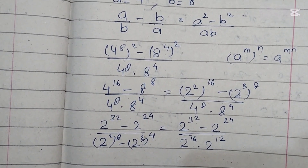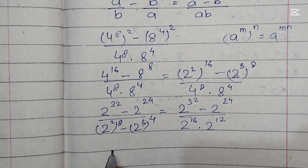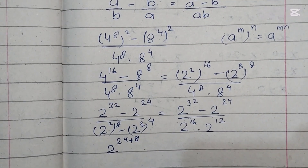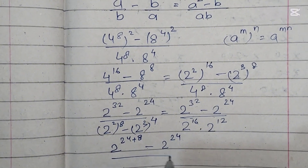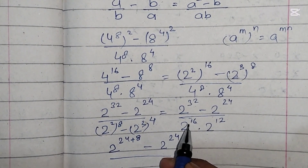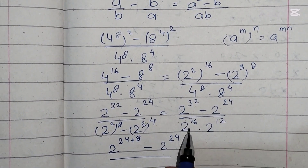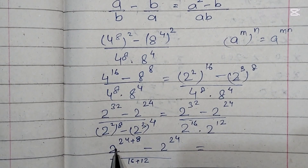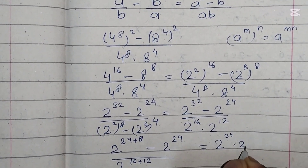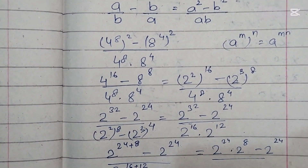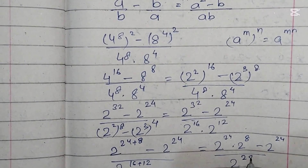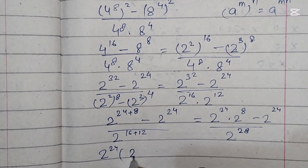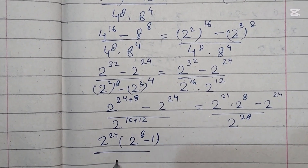This gives us 2 power 32 minus 2 power 24, over 2 power 16 times 2 power 12. We can write 2 power 32 as 2 power 24 plus 8. Since the bases are the same, the exponents in the denominator add up: 2 power 16 plus 12 equals 2 power 28. We then take 2 power 24 as a common factor, leaving 2 power 24 times the quantity 2 power 8 minus 1, over 2 power 28.